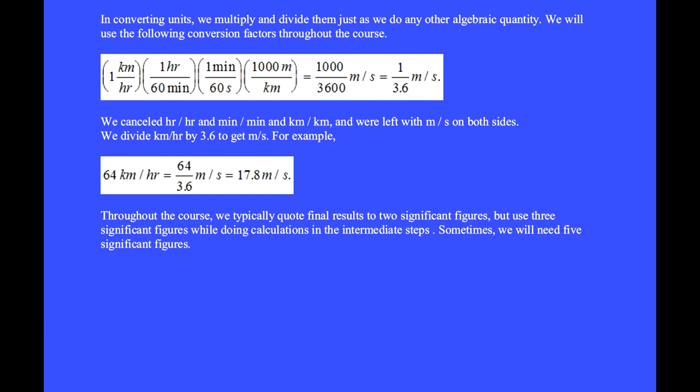In converting units, we multiply and divide them just as we would do any other algebraic quantity. We will use the following conversion factors throughout the course. We will see that we divide kilometers per hour by 3.6 to get meters per second. In this value, 1 kilometer per hour, we want first to switch the hour to minute. I put the hour in the numerator to cancel this one in the denominator.